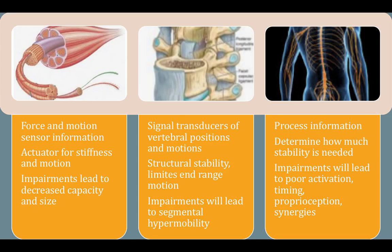Here are some more specifics on the subsystems and what they mean to us as rehab clinicians. The active system gives our brain and body feedback on forces and motion that the spine is experiencing. It also is an actuator of stiffness, meaning it controls the amount of muscle contraction or motion that is occurring. Impairments in this system are noted by decreasing muscle size, decrease in endurance, and decrease in strength. The passive system tells the brain about the position and motion of the lumbar segments. Damage to this system will create hypermobility.